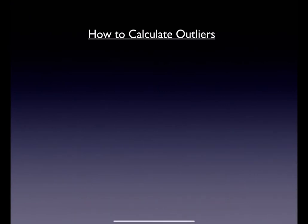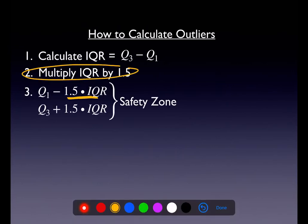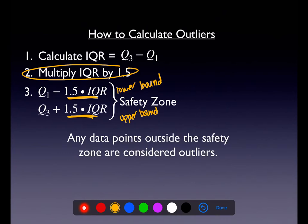To find outliers, we create a 'safety zone.' First, calculate the IQR. Then multiply that by 1.5. Subtract that result from Q1 to get the lower bound of the safety zone, and add it to Q3 to get the upper bound. Any data points outside the safety zone are considered outliers.